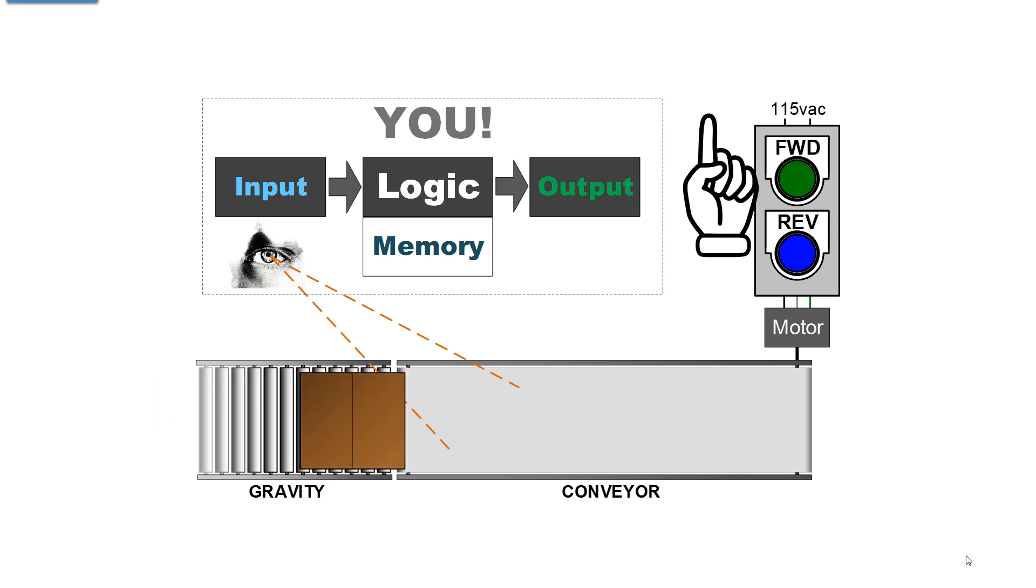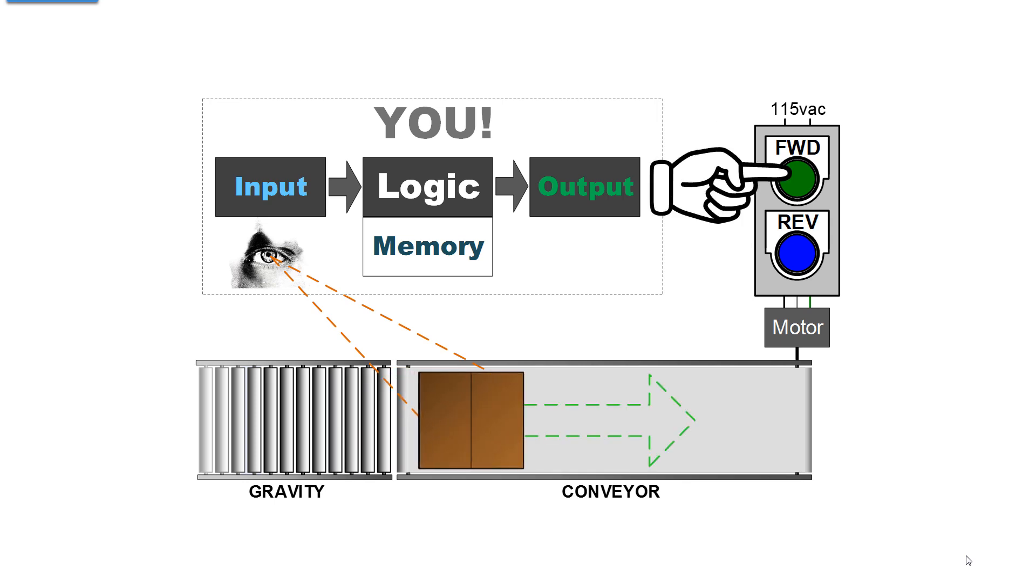You observe a carton rolling down and resting against the de-energized leading edge of the belt conveyor. You focus your eyes on the spot on the conveyor where you want the carton to come to rest and you press the forward button and when it comes to rest you stop. Keep in mind that you did not stop the conveyor with your finger. Your muscle reaction released the forward button that opened a contact to remove electricity from the motor. The motor de-energized and the conveyor stopped.